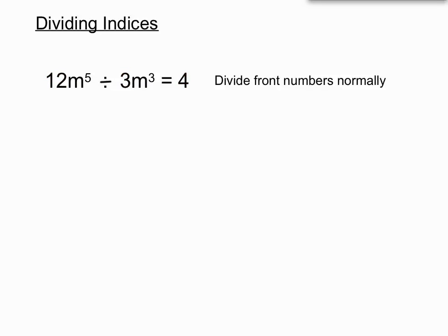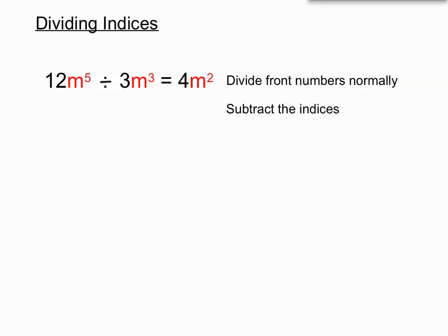And the normal rule is m to the 5 divided by m to the 3 — we just said we should subtract the indices — so the answer to that just gets tacked on after the 4 as well, giving us 4m squared.